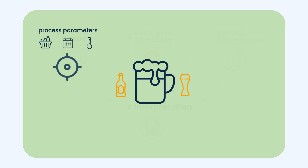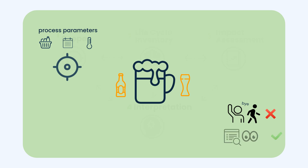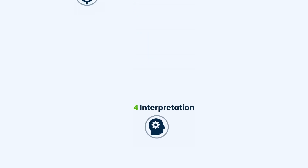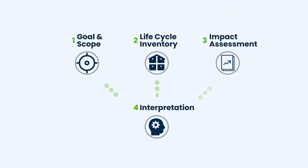After the process has started, you can't just let the process run and check on the beer in the end. You need to monitor the process continuously to see if everything is going according to plan or if something needs to be adjusted to make sure you end up with quality beer you can sell. In LCA, interpretation functions as the quality control. With every step you take, take the time to reflect your choices critically and see if they are in line with the goal and scope.